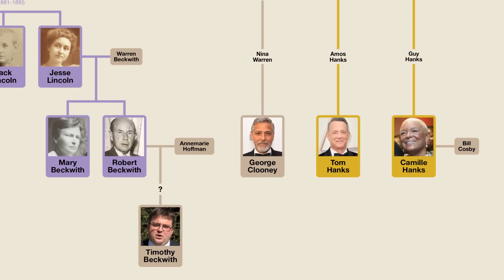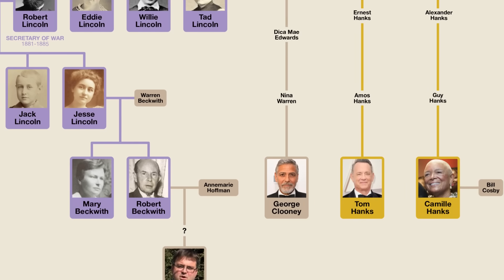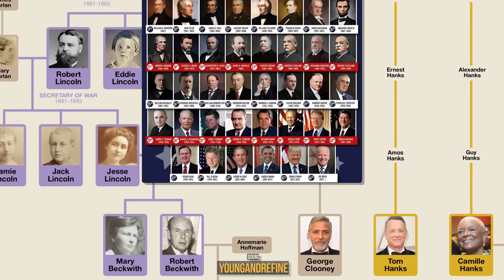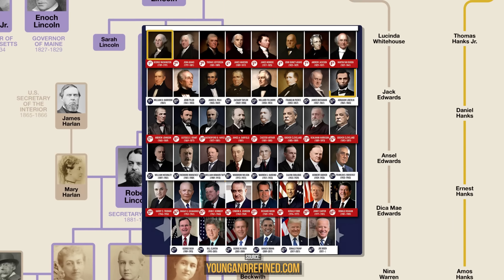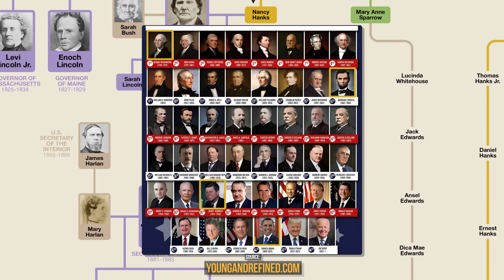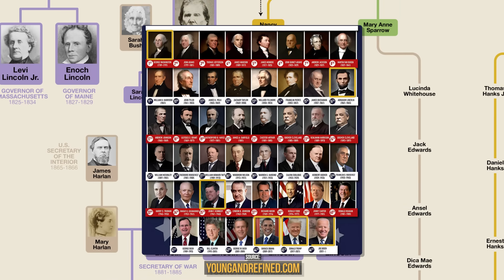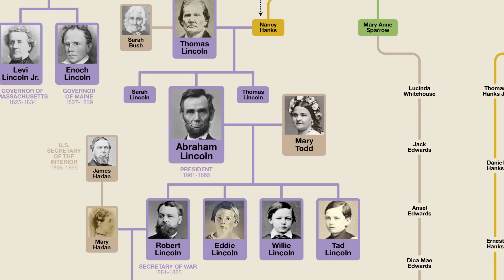Okay, so that was a look at the family tree of Abraham Lincoln. So far on this channel, we've covered Washington, Lincoln, Kennedy, Obama, Trump, and Biden — so there are many presidents we have not yet looked at. Let me know in the comments which US president you would like to see the family tree of next. And don't forget to check out MyHeritage by clicking the link in the description or pinned comment.